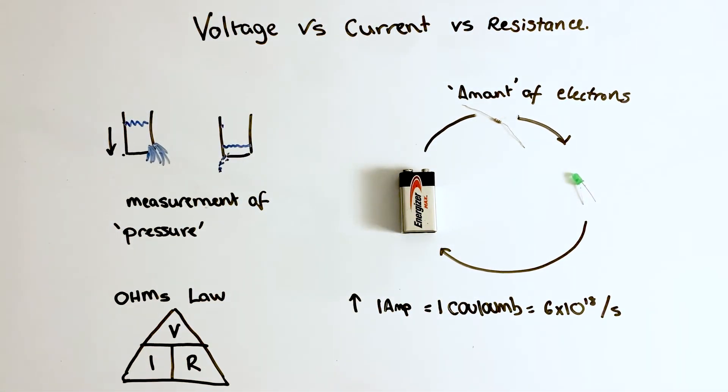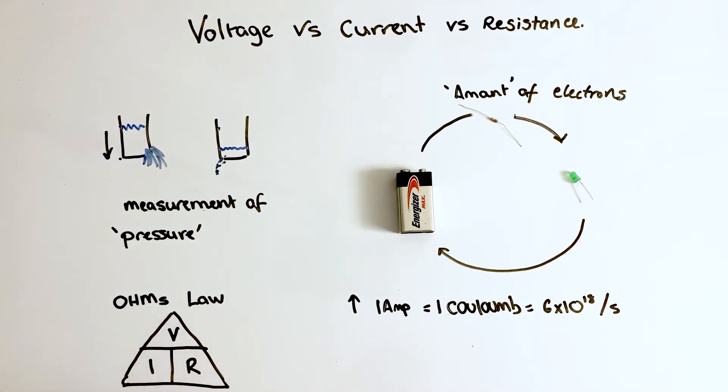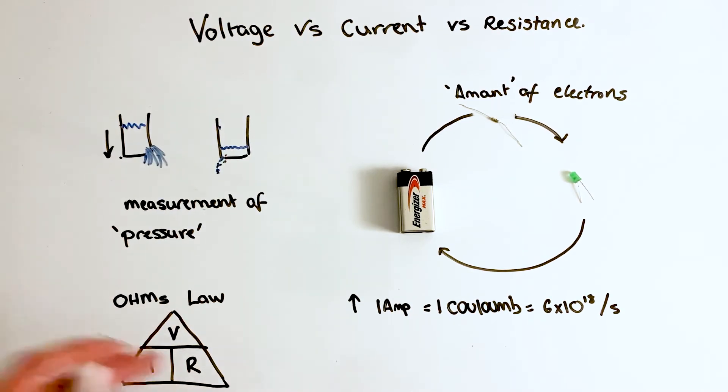And the last thing we'll just talk about is this thing called Ohm's Law, and you'll see this a lot on your learning journey when we're talking about electricity. It basically shows you that there's a balance between voltage, current, and resistance. And if I want to figure out, say, the voltage of any circuit or the voltage I should apply to any circuit, I can use a measurement of current times resistance.